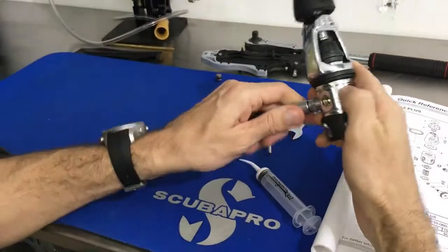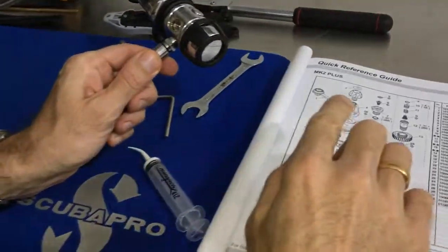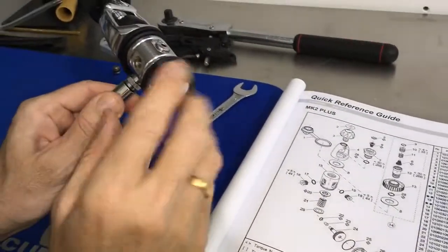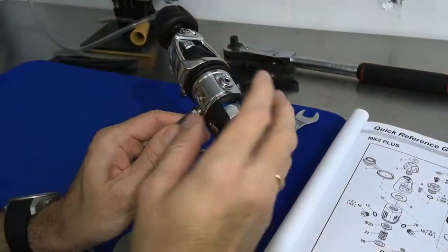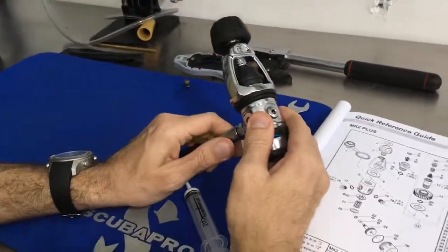That's how tight you should be making all of the hoses on your first stage body. That's the rating specified by the manufacturer in the schematics, and that's the best way to make sure that your threads don't stretch and there's no issue with the brass or chrome components of your first stage and your low pressure hoses.